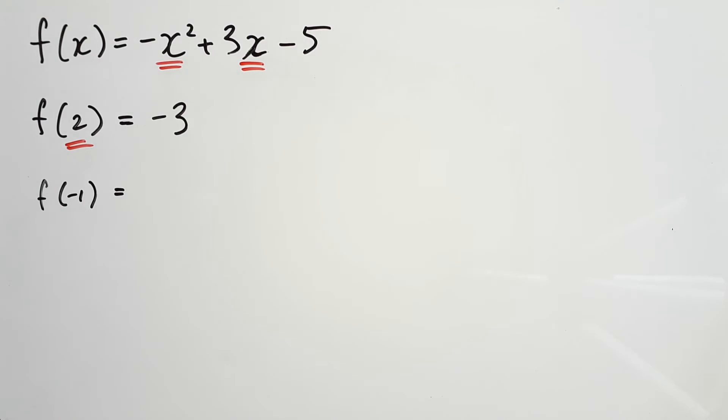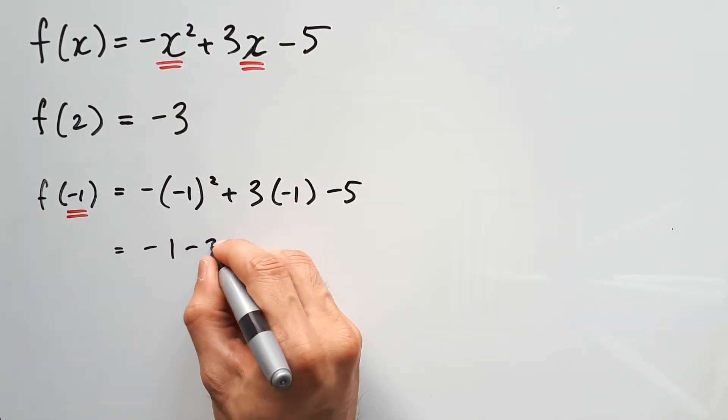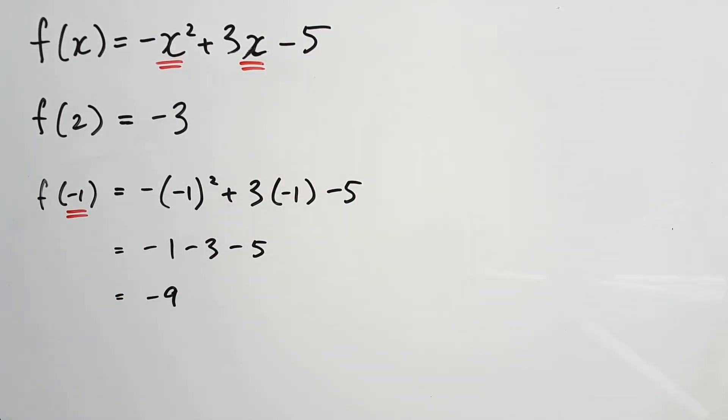As for f of negative 1, you'll do the same thing. Now we're going to just replace x with negative 1. Working that out brings us to a result of negative 9. So if you wanted to write a coordinate, you can say negative 1 comma negative 9.